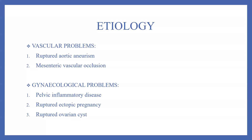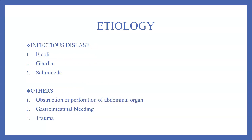Abdominal pain can also arise due to vascular problems, which could occur due to ruptured aortic aneurysm or mesenteric vascular occlusion. It can be seen in certain gynecological conditions such as pelvic inflammatory disease, ruptured ectopic pregnancy, or ruptured ovarian cyst. Other conditions include infectious diseases caused by E. coli, Giardia, and Salmonella.